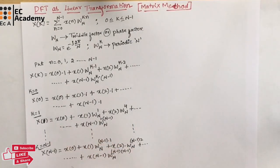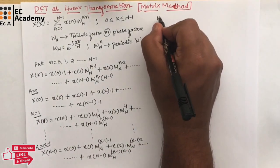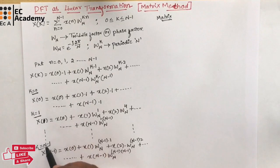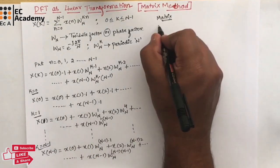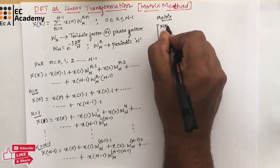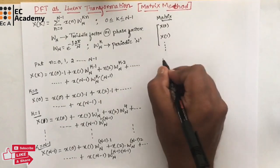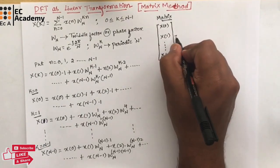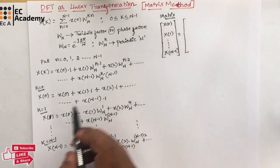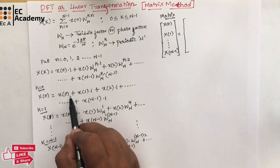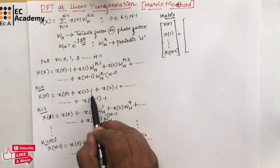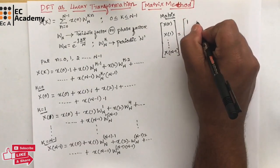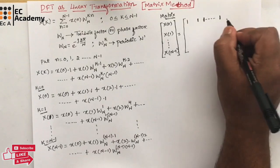Now, these equations can be written in the form of a matrix. In the LHS, we have X(0), X(1), and so on up to X(N-1). On the right side, we write the W matrix: the first row is all 1s, and the first column is also all 1s.